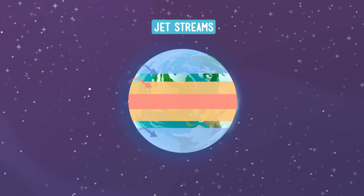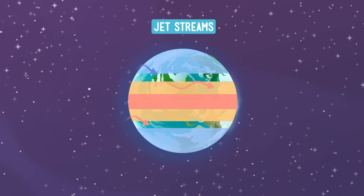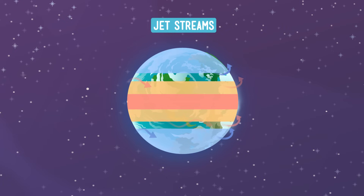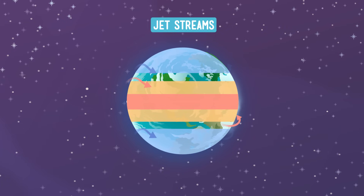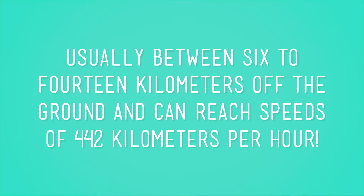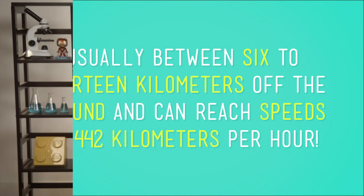Jet streams move in wiggly patterns across Earth, caused by the interaction with other high and low-pressure systems and also with seasonal changes. These streams are usually between 6 to 14 kilometers off the ground and can reach speeds of 442 kilometers per hour. But of course, there's more.